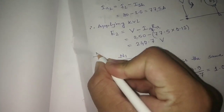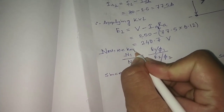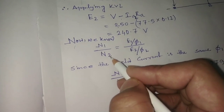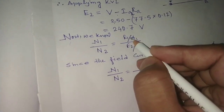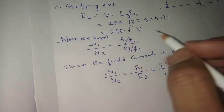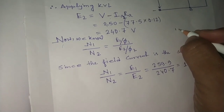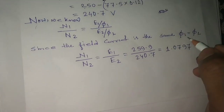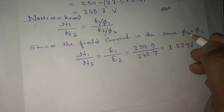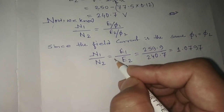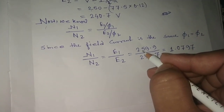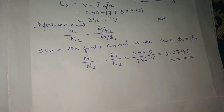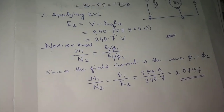Now we know that N1 by N2 — speed of the generator divided by speed of the motor — equals E1 divided by phi1, over E2 divided by phi2. Since the field current is the same in both cases, phi1 equals phi2, so N1 by N2 equals E1 by E2, which is 259.9 divided by 240.7, giving the speed ratio as approximately 1.0797. That's it, thank you.